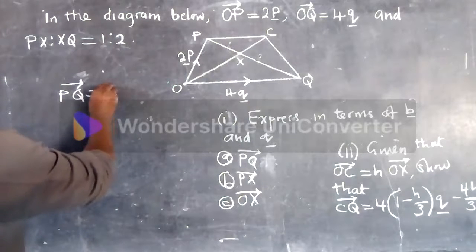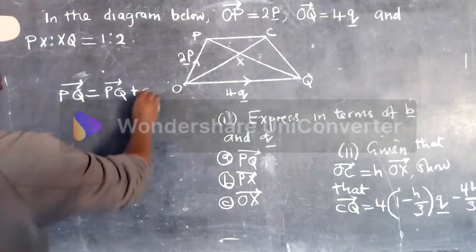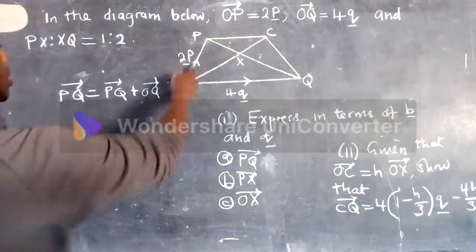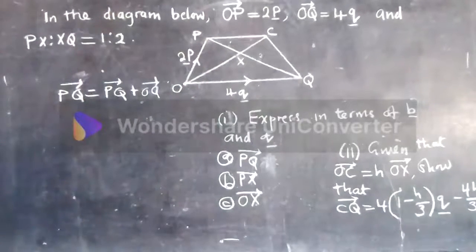So p, o, plus o, q. So from here, you move like this, p, o, o, q is equal to this one here.